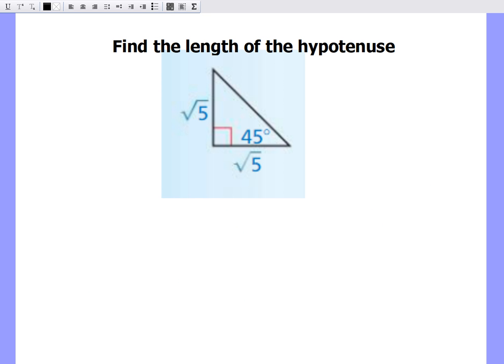On to my next. I will find the length of this hypotenuse. Once again, by the triangle sum theorem, I find out that I have a missing angle of 45 degrees. So I have a 45, 45, 90 triangle.